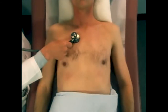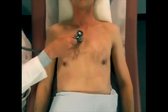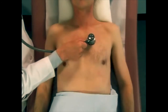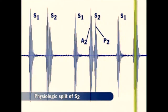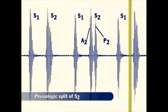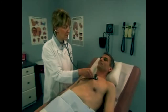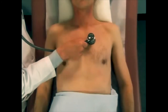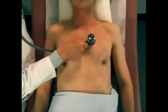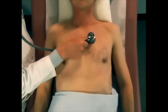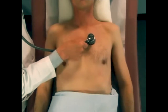Still listening in the aortic area, but focusing more in the pulmonic area, try to identify the inspiratory splitting of S2 into its two components. Its first component, A2, is from left-sided aortic valve closure. Its second component, P2, comes from right-sided pulmonic valve closure. This physiologic split of S2A and S2P normally occurs during inspiration. During expiration, however, these two components are fused into a single sound, S2.